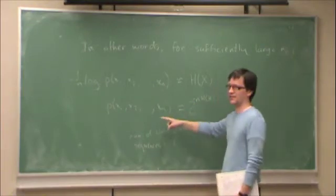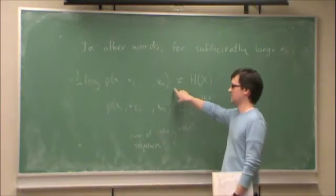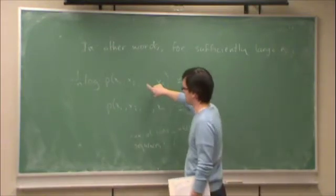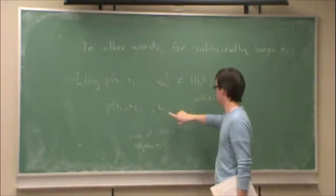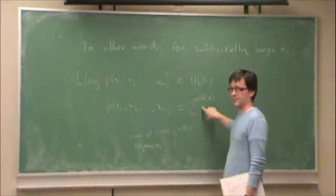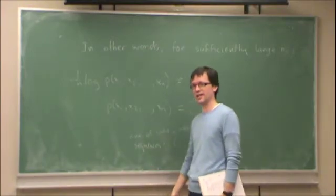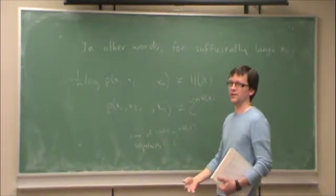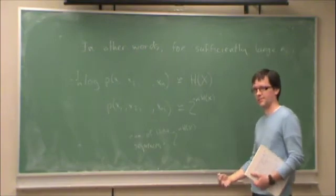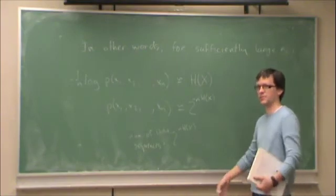But the number of likely sequences... What the weak law of large numbers is telling us is that if I pick such a sequence, its probability is likely very close to here. So therefore, let's call those the likely sequences. Actually, later we're going to call them by a specific technical term called the typical sequences. But for now, let's just think of them as likely sequences.